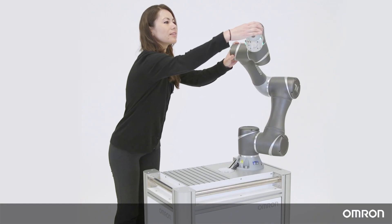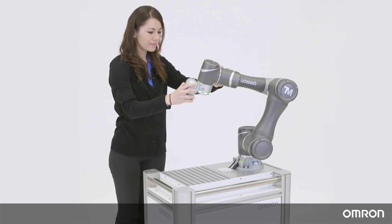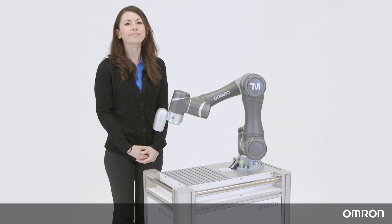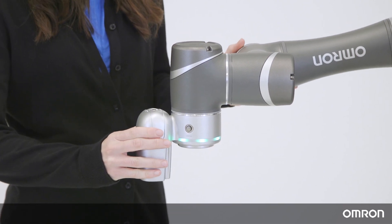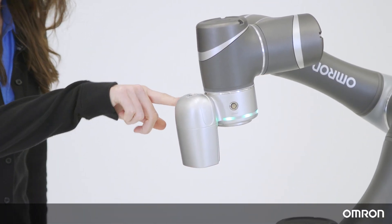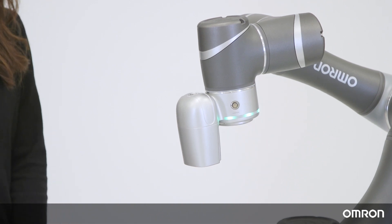Move the cobot again pressing the Free button to another position. Press the Point button again to remember and store that location. Repeat this one more time. You have now taught the cobot three different points.